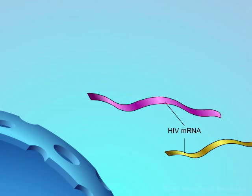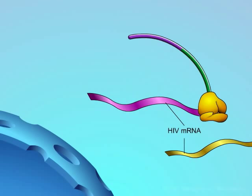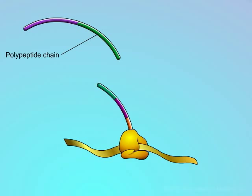A host cell ribosome normally moves along a viral messenger RNA strand and translates it into viral proteins. These proteins include enzymes that are themselves synthesized in the form of long polypeptide chains.